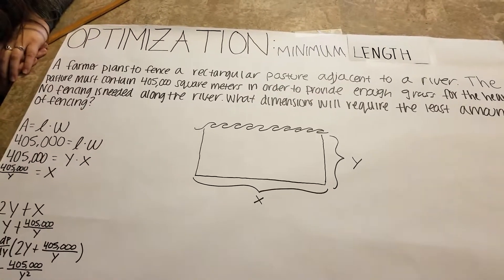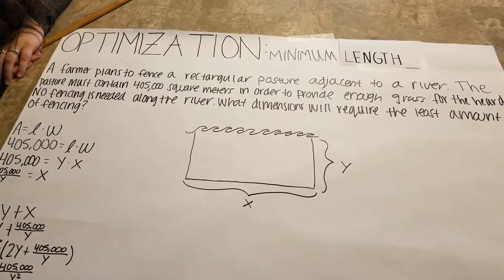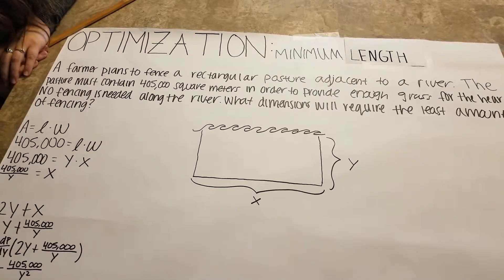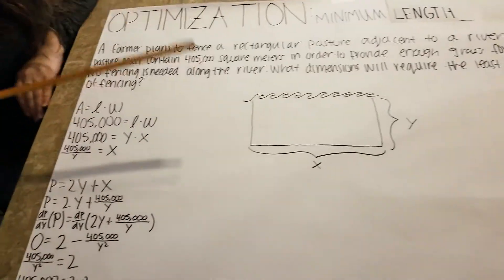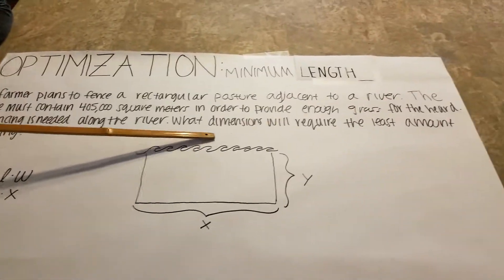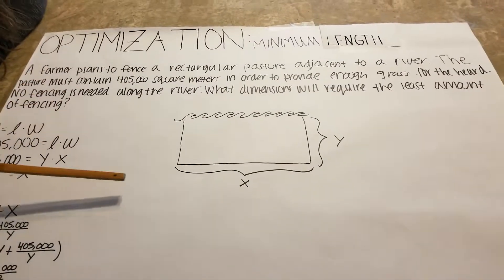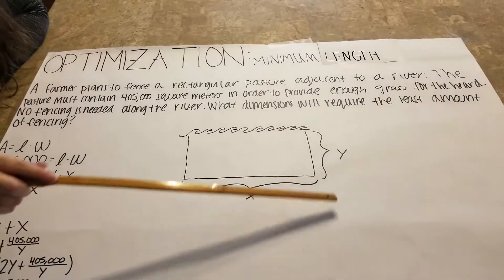No fencing is needed along the river. What dimensions will require the least amount of fencing? This is our picture for today and the river is indicated by this. We have X and we have Y.